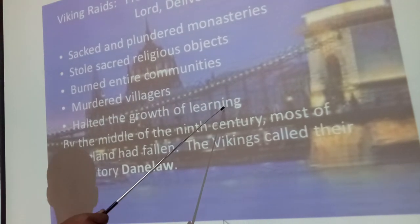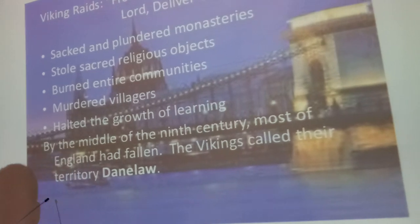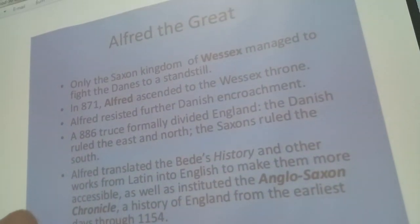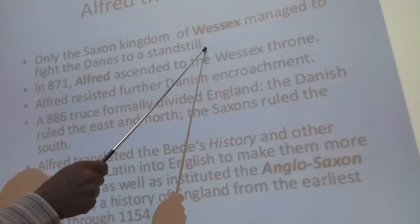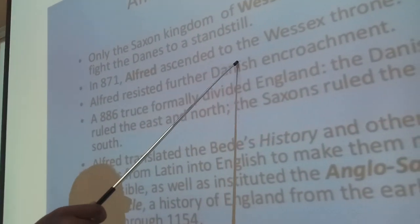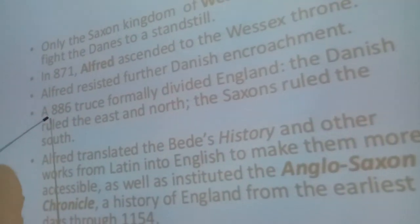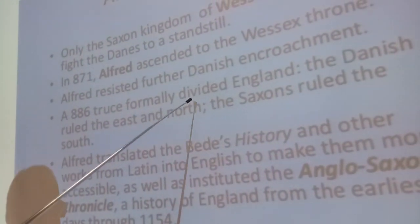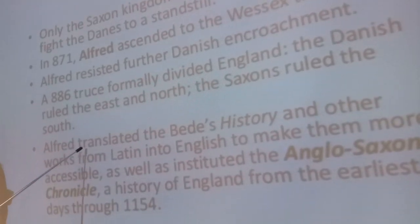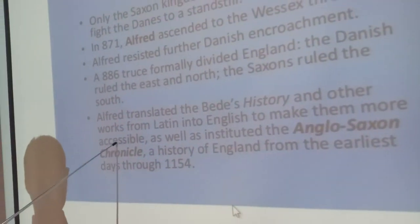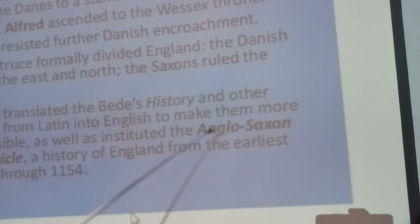The Viking raids halted the growth of learning. By the middle of the 9th century, most of England had fallen. The Vikings called their territory the Danelaw. Alfred the Great: only the Saxon Kingdom of Wessex managed to fight the Danes to a standstill. In 871, Alfred ascended to the Wessex throne.